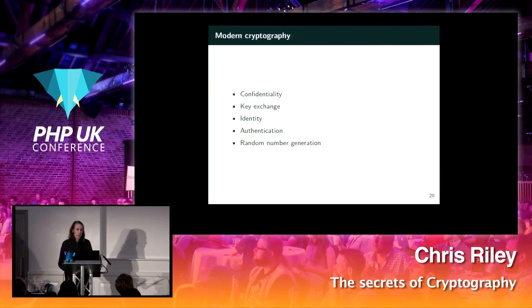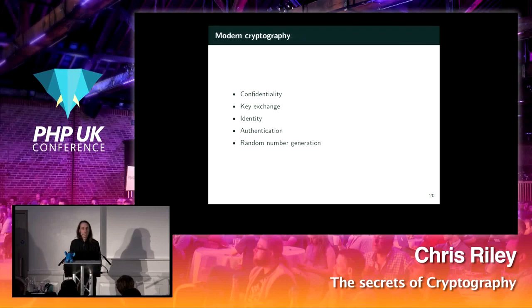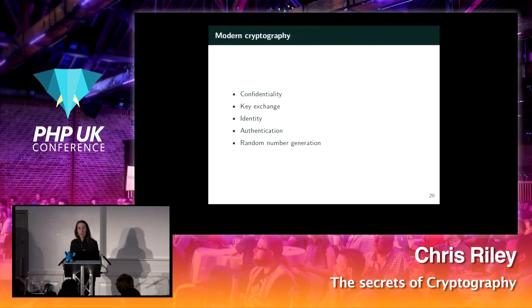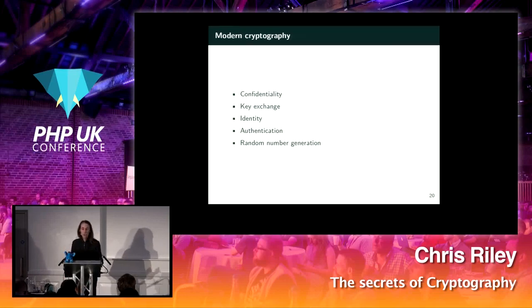A final thing that quite a lot of people don't realise is part of modern cryptography is the ability to generate random numbers. A large number of secure protocols rely on being able to generate numbers that are actually random. For example, in a public key cryptography system you might generate a random key to use with a symmetric cipher, encrypt that with the public and private keys, and send the whole lot along. If someone can predict the number from your random number generator, they can guess the key and simply decrypt the message. So being able to generate secure random numbers is really important.